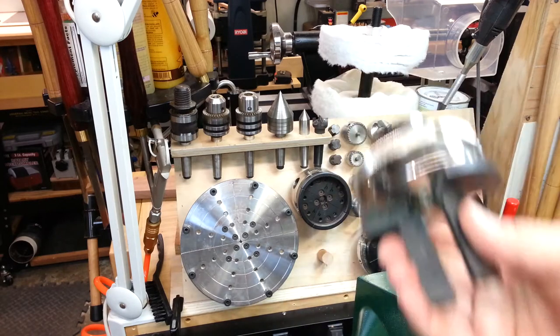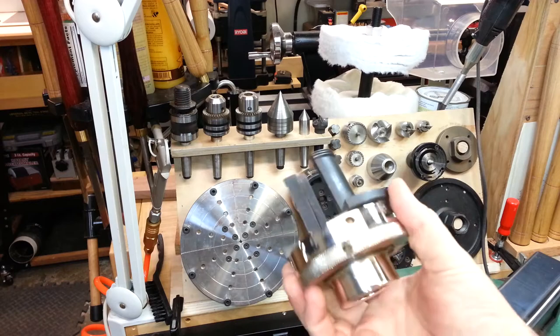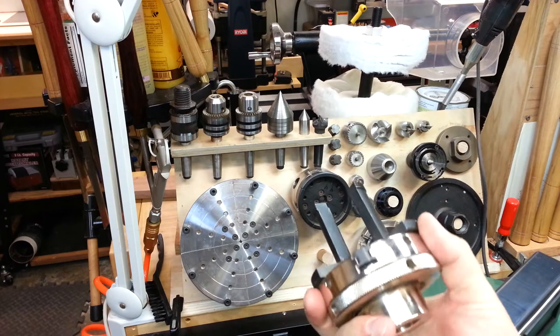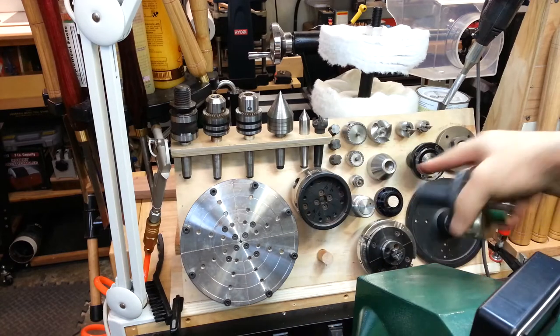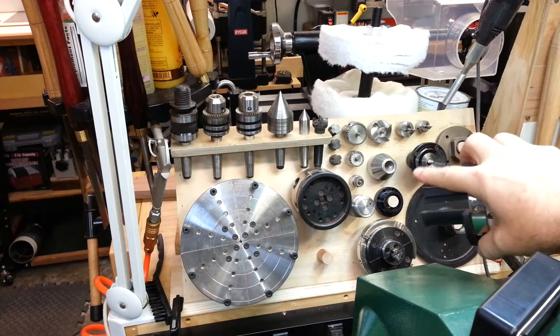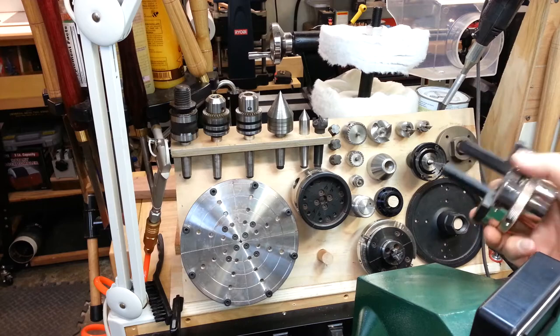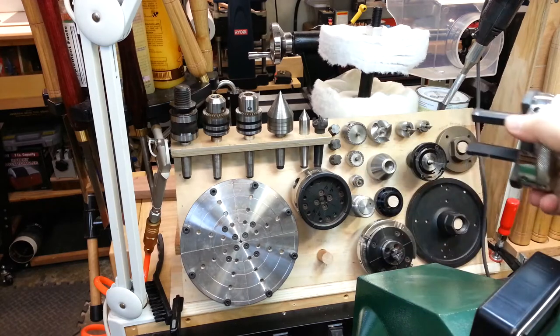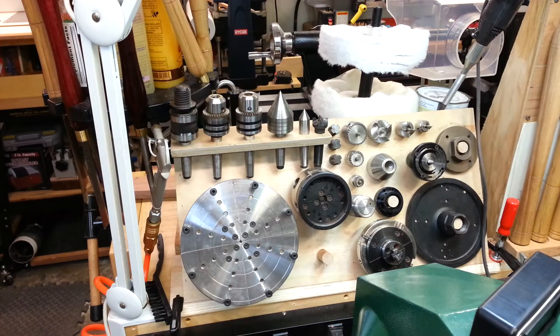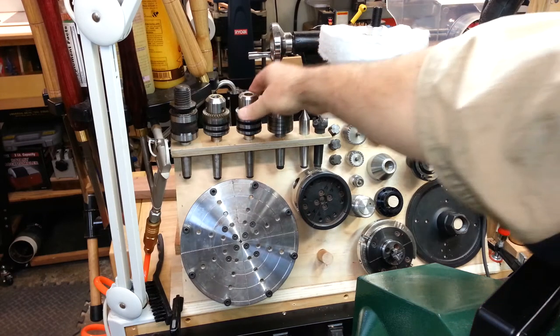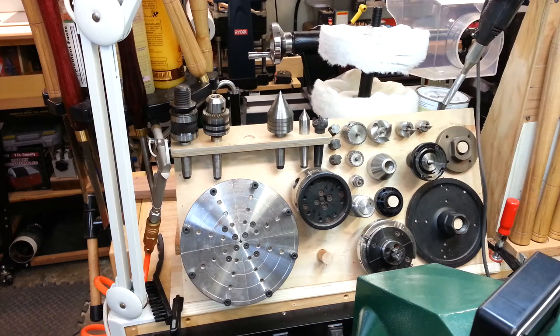I'm going to take these pen jaws. This chuck is a PSI chuck. I believe it's their mini chuck, C series. And all these jaws are for the C series. So the barracuda, the economy chucks, they're all interchangeable. So that means all of my chucks fit all of my jaws. And I need a drill chuck. So we'll grab the drill chuck and we'll get to drilling.